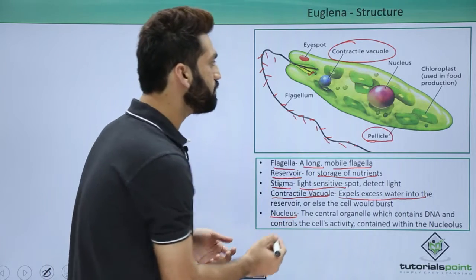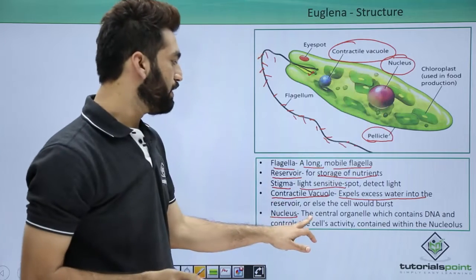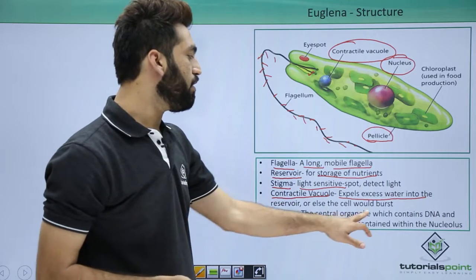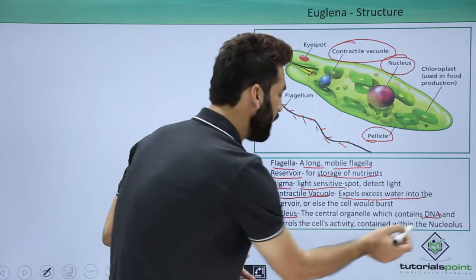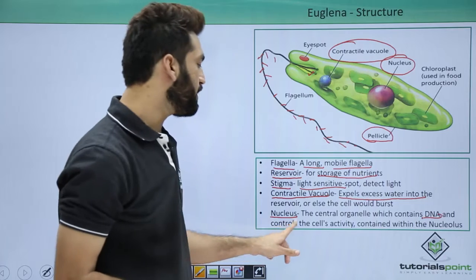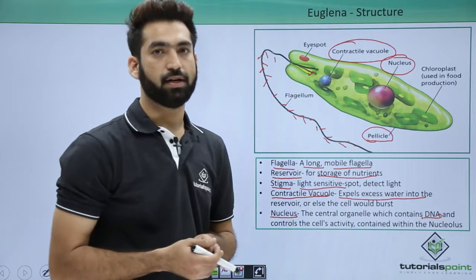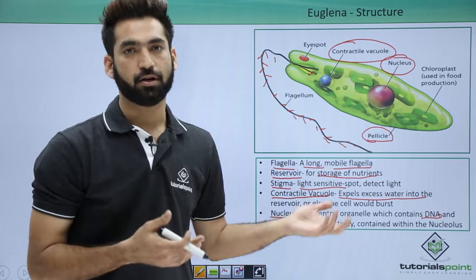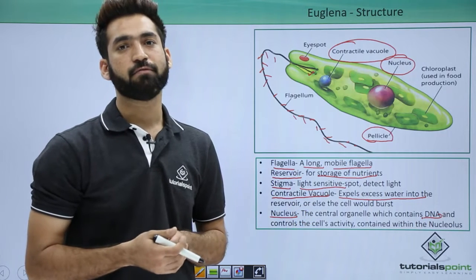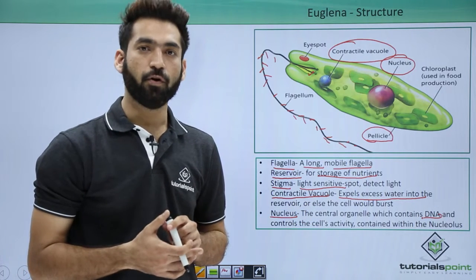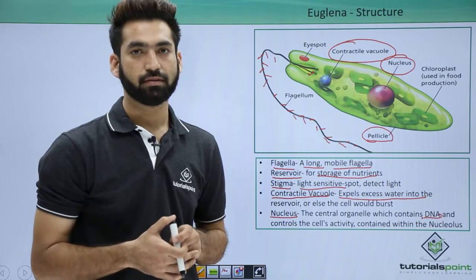When we talk about the nucleus — if you can look at the nucleus of Euglenoid members — there is a central organelle which contains DNA. The DNA controls cell activity, and it is contained within the nucleolus. So they also have a nucleolus and other organelles. In the next session we will be detailing you about the fourth protist member, which is slime mold.